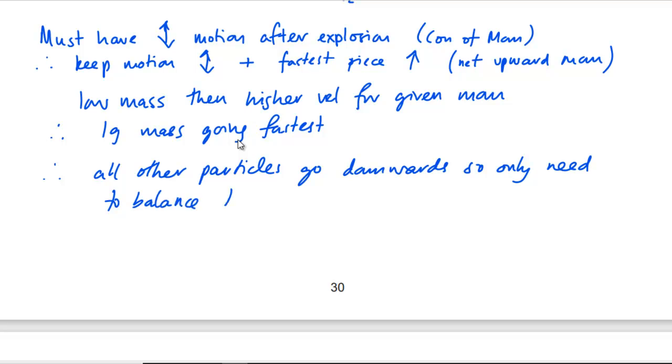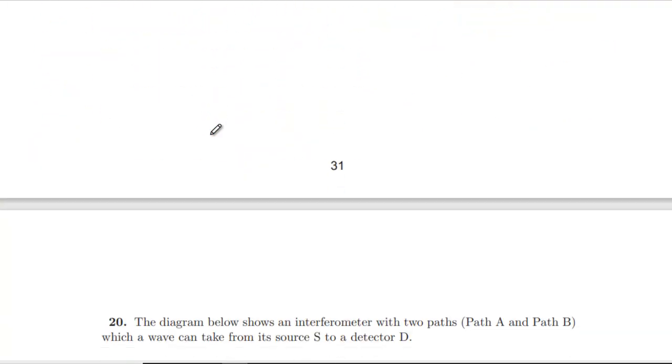So we only have to balance the upwards momentum of the 1 gram piece. Because if we had two bits going upwards, then the ones going downwards need to be going faster to balance that, so they're taking energy away. Whereas if you've got three things going sluggishly downwards, they can all contribute to counteracting the upwards motion of the 1 gram mass. So we need m₁ going upwards and m₂, m₃, m₄ going downwards. Yeah, that's quite an interesting way of thinking about it. Quite a nice question.